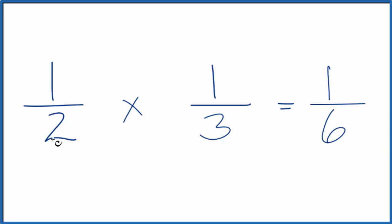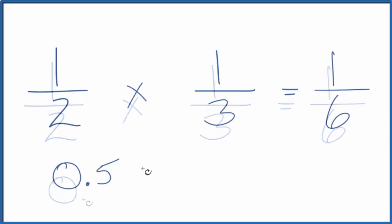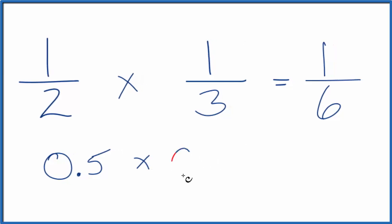And we can check this by converting these fractions to decimals. So one divided by two, that's 0.5, times one divided by three, that's 0.333 with the three repeating, so just put a bar over it.